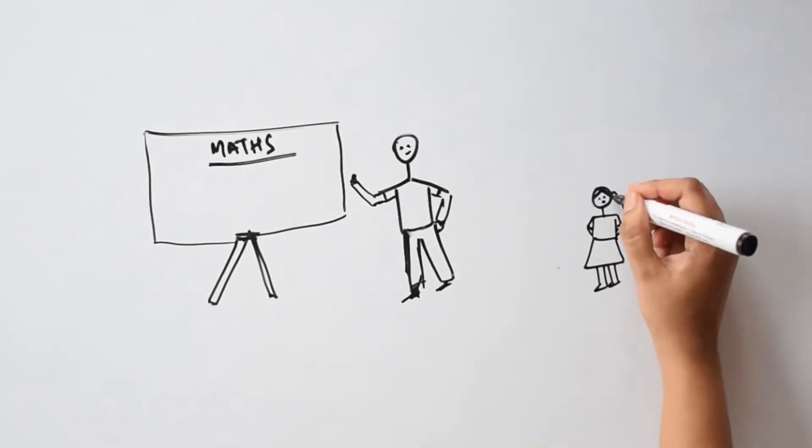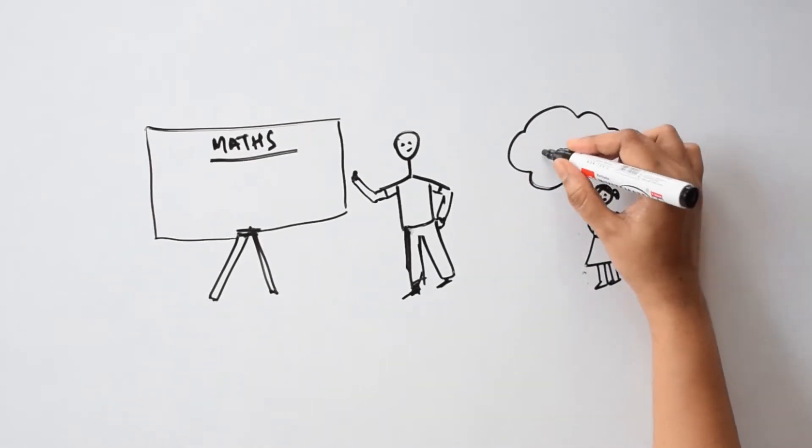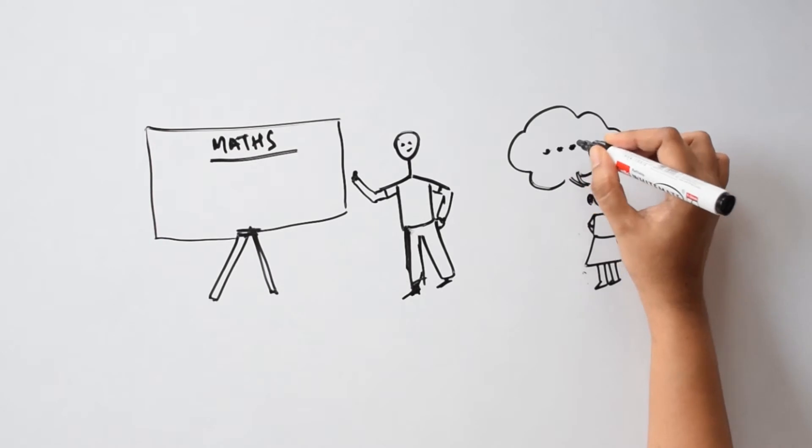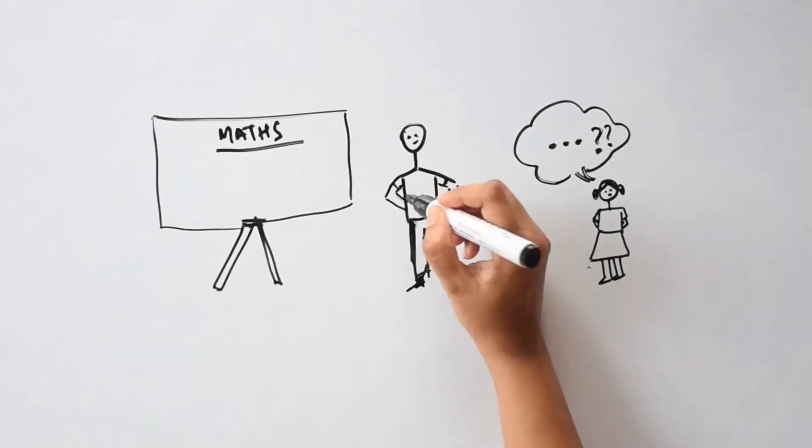6 1s are 6, 6 2s are 12, 6 3s are 18, 6 4s are 21, 22... 6 4s are... 6 4s are what?